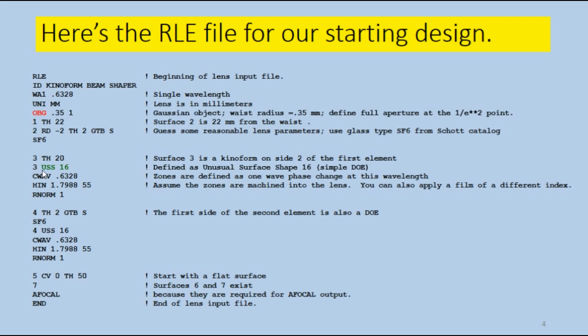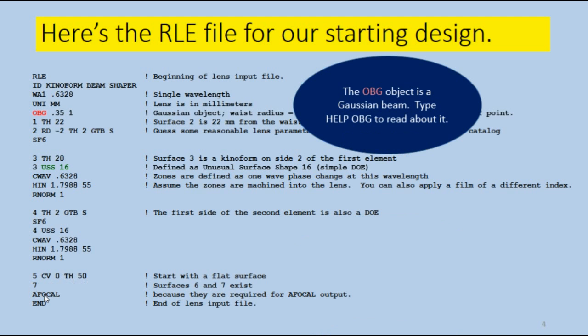And surface 3 is going to be assigned a surface type, unusual surface shape 16, which is the way you can model a simple DOE. Now, that surface requires some additional input. We have to give it a construction wavelength, which is just the helium neon wavelength. And we give it an index, the same as the SF6. The program will use that index when it calculates the height of the zone, so it gets the right slope angle to get the Bragg condition. And we give it a normalizing factor, which is a good idea. Now, surface 4 is the first side of the second element, and it's also going to be a DOE. Surface 5 is then the second side of the second element. And from there, we're going to go a distance of 50 millimeters, and we're going to reach two more surfaces, number 6 and 7, which we need because the lens is going to be put in afocal mode. Okay, so we've used object type OBG, and you can look in the help file to read about it.